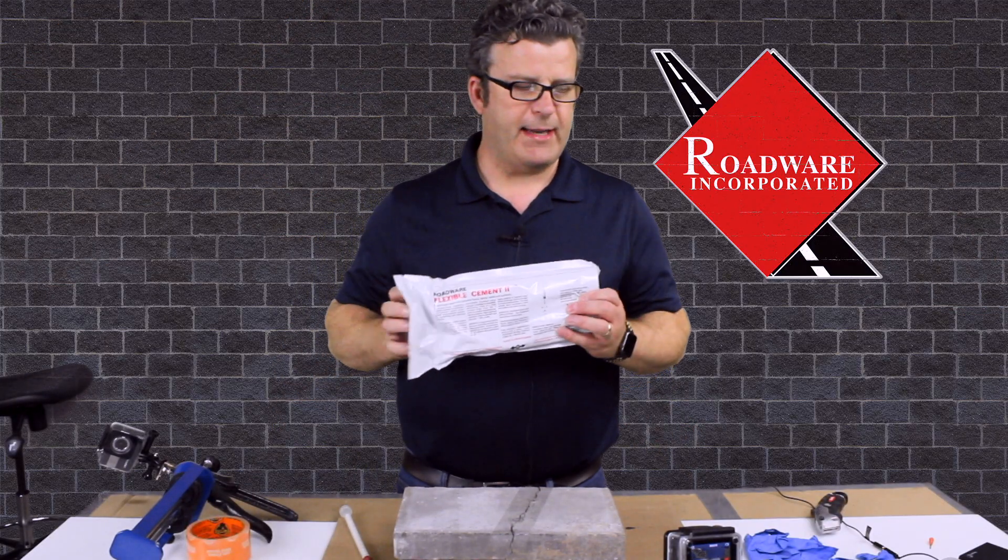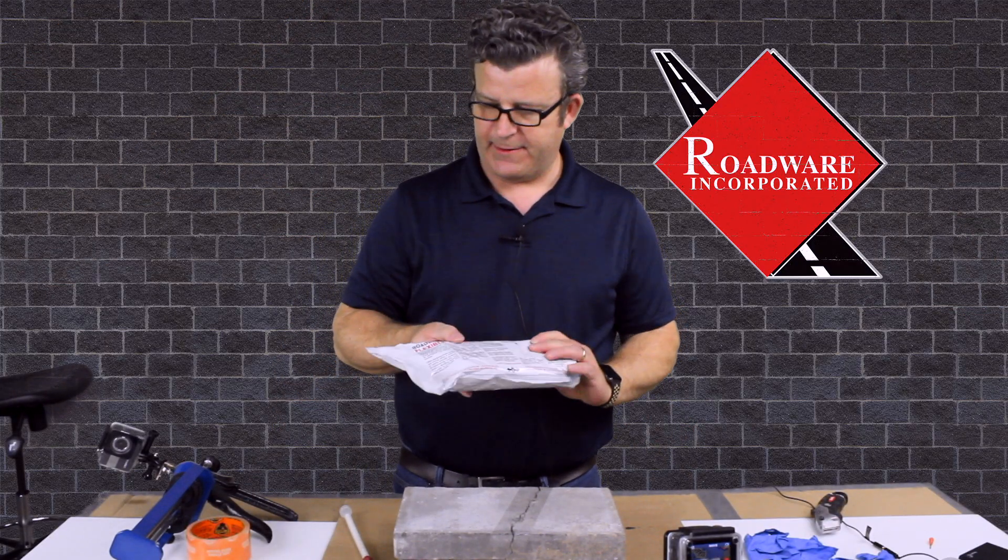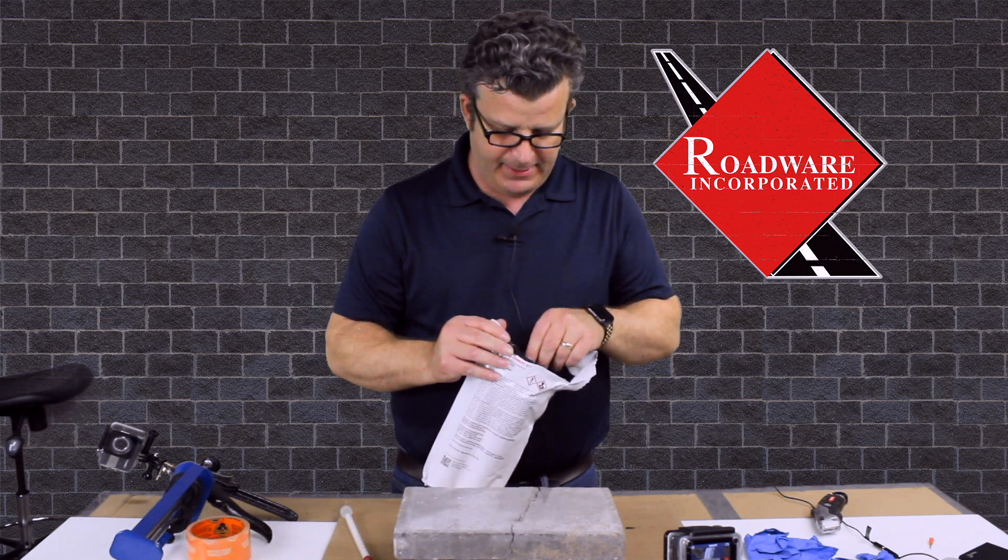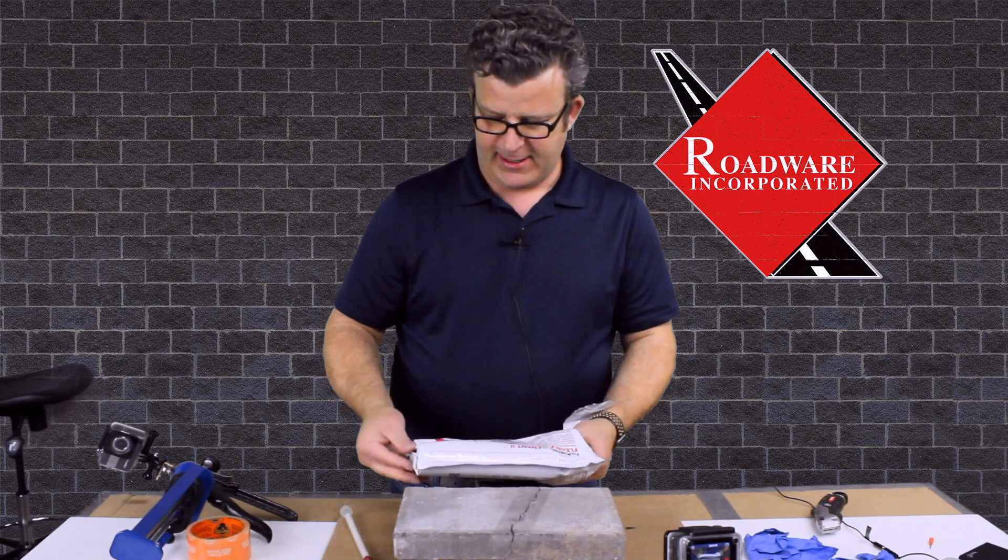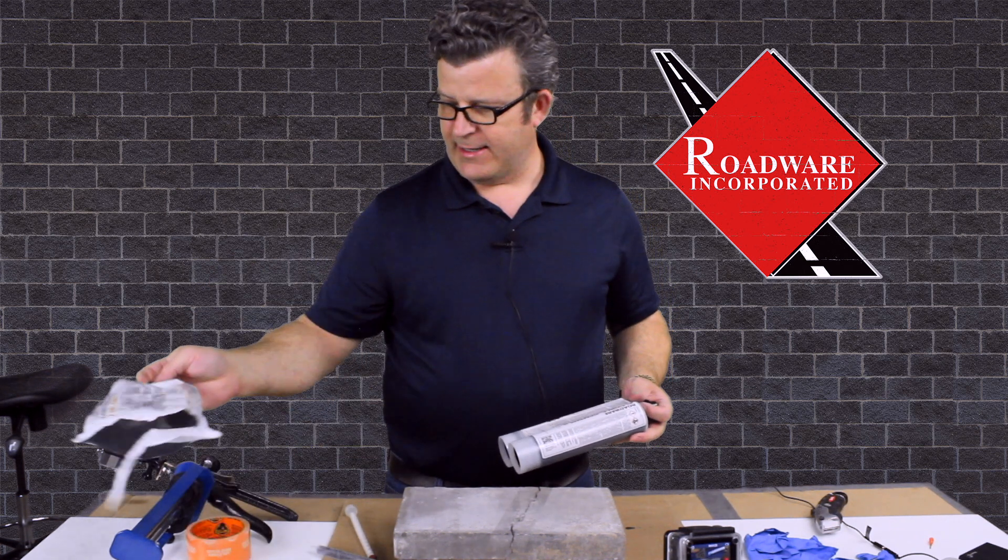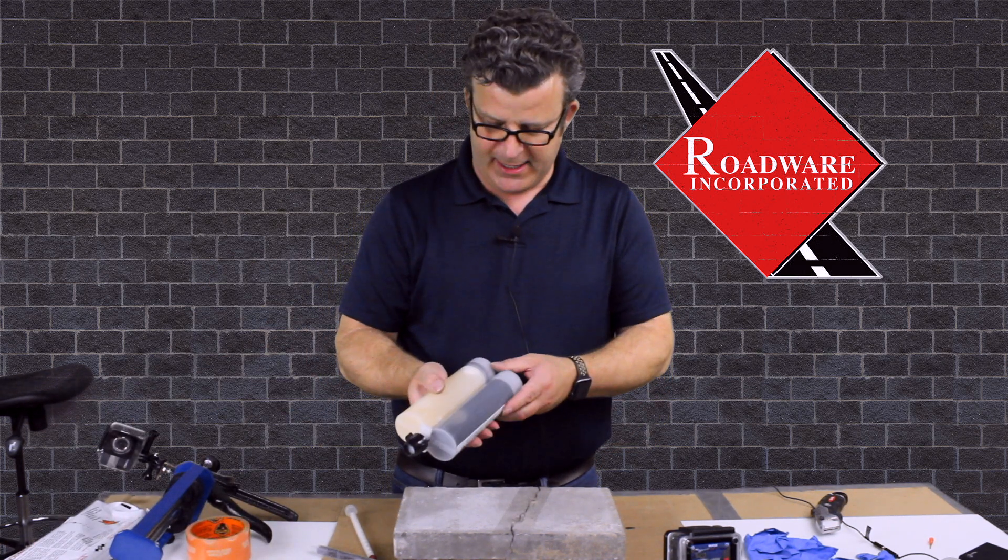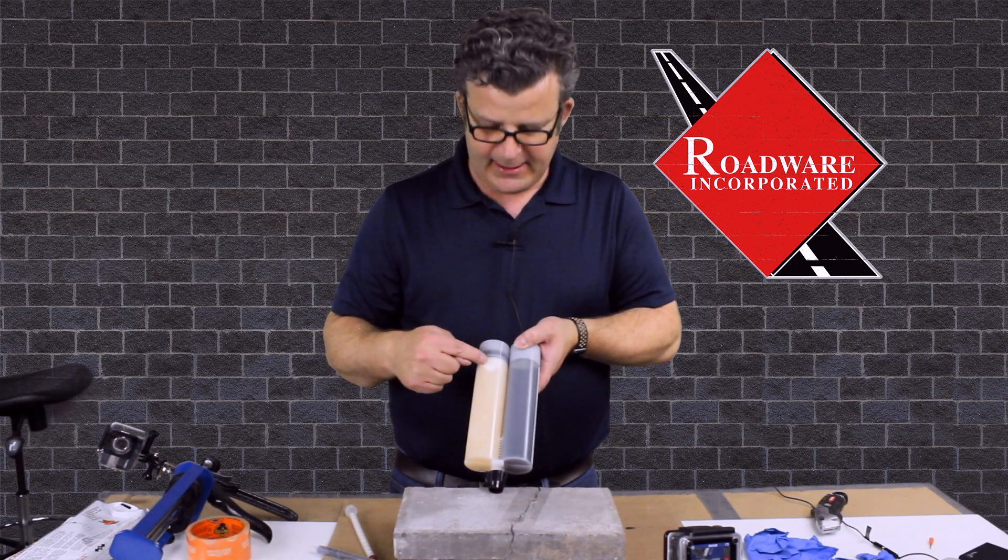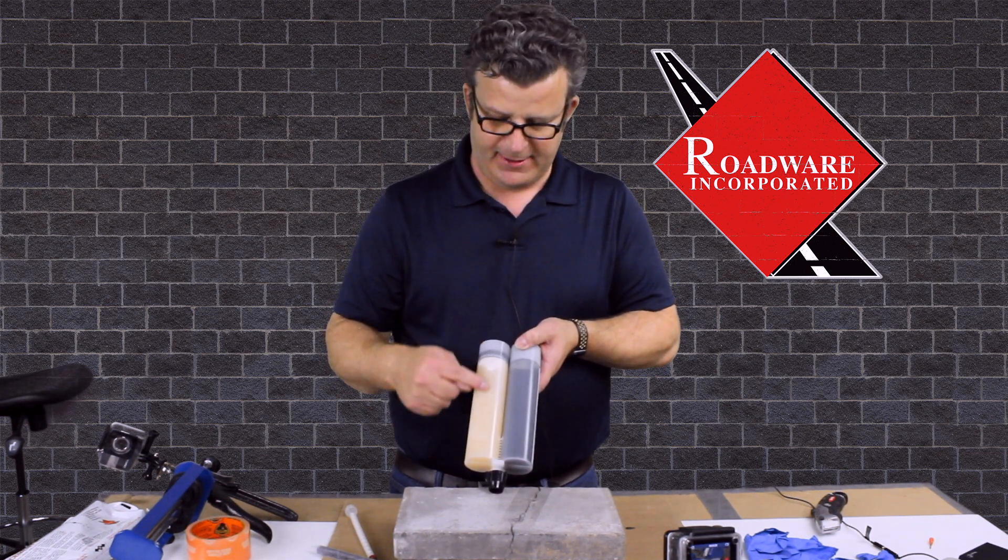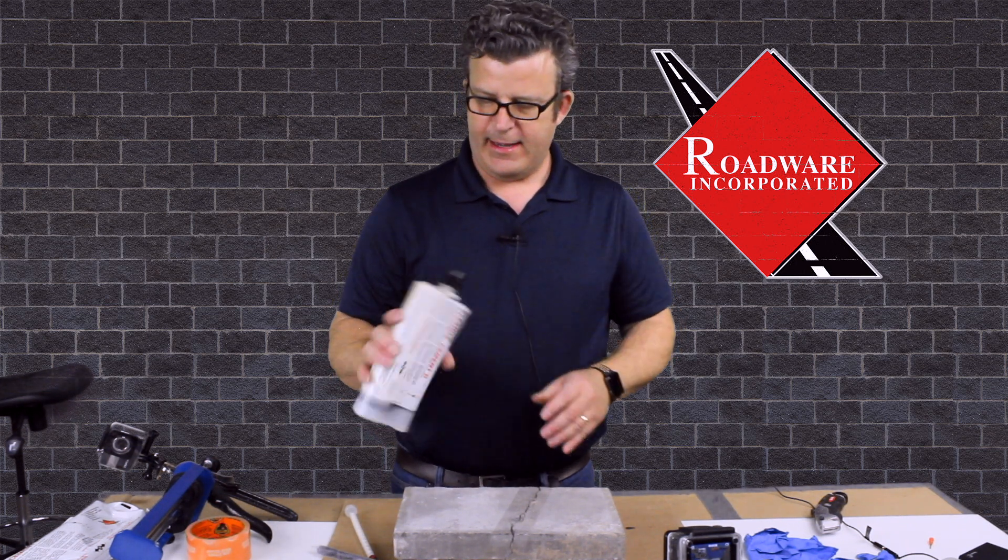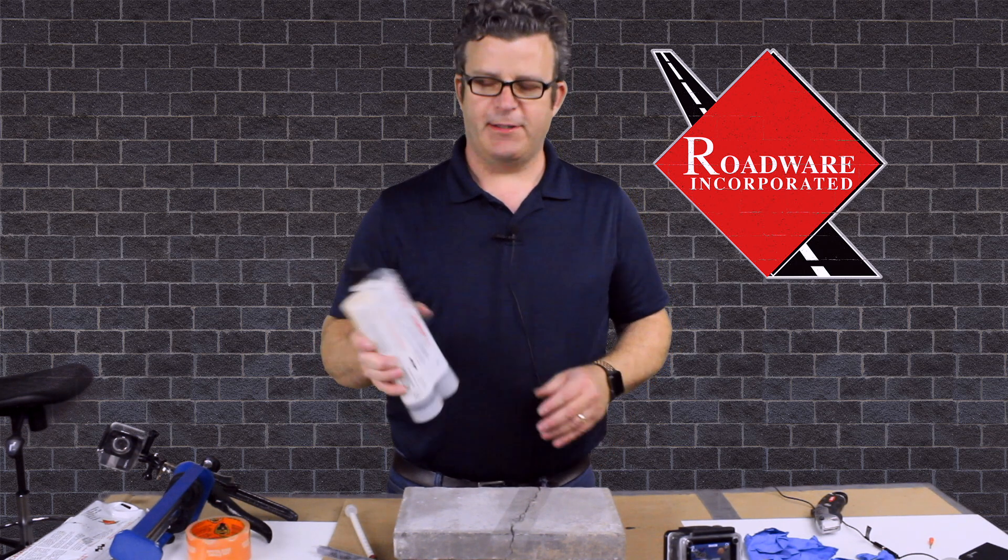Now this is our Roadwear Flexible Cement II. It is a product that we've made for almost over 20 years. It's a little bit thicker than our concrete mender, as you're going to notice. What I like to do with Flexible Cement II is warm it up a little bit because some of the colorant settles out over time, so we like to warm it up to about 80 degrees Fahrenheit and shake it before we use it.